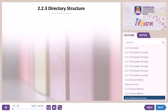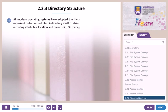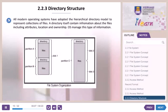2.2.3 Directory Structure. All modern operating systems have adopted the hierarchical directory model to represent collections of files. A directory itself contains information about the files, including attributes, location and ownership. The OS manages this type of information.